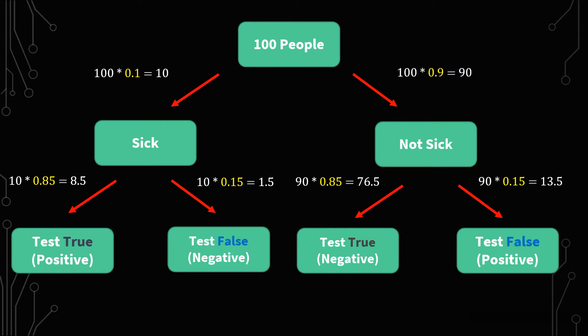Based off the calculations, we know that 10 are sick and 90 are not sick. Alright, so that's one level. Now we need to go to the next level. What's the next level? It's about the test.